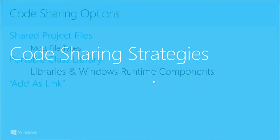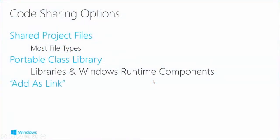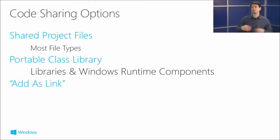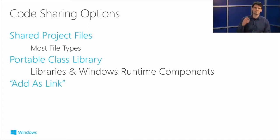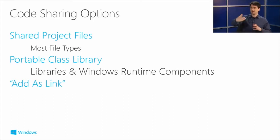Now for code sharing strategies — there are many ways to share code in Windows 8.1 and Windows Phone 8.1. The big one we've talked about most is shared project files, because it's the easiest and very effective. There are very few restrictions on what you can put in the shared project — it accepts most file types: images, assets, localization files, XML, pretty much everything. It just grabs all that data and sucks those files into both projects.